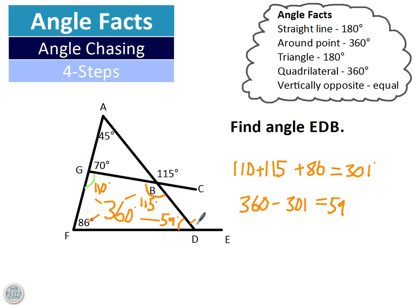And now to work out this one, which is the fourth step, I'll do angles on the straight line. 180 take away 59 equals 121. So the angle that we were looking for was 121.